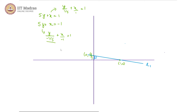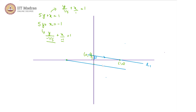Now looking at the other equation, the y-intercept is minus 1/5 and x-intercept is minus 1. This line is exactly opposite to L1. We can construct this second line, and as you can see they are both parallel, each at exactly 1 by root 26 perpendicular distance from the origin. So we have two lines which satisfy our requirements: 5y plus x equals 1, and 5y plus x equals minus 1.